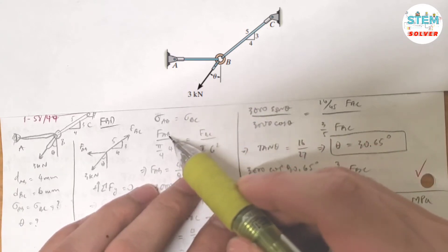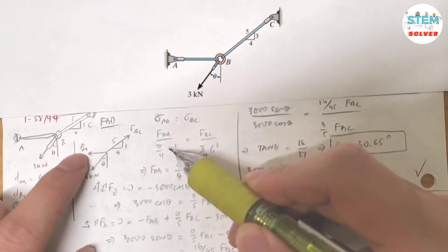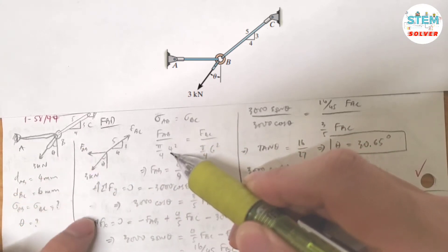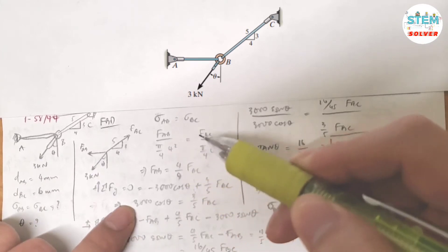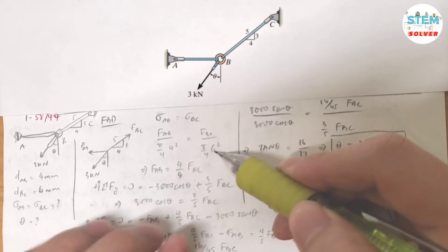Normal stress equals the normal force divided by the area. So we have FAB, here's my free body diagram, FAB divided by π/4 times 4 squared equals FBC divided by π/4 times 6 squared.